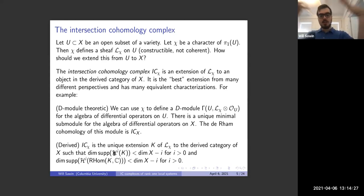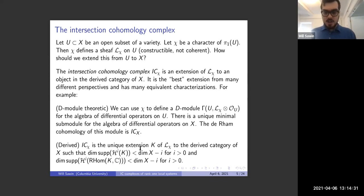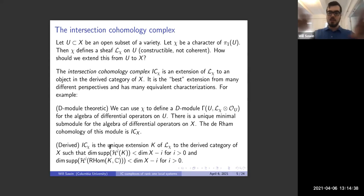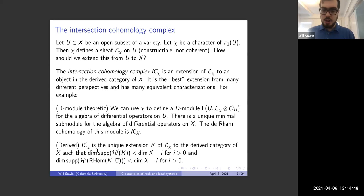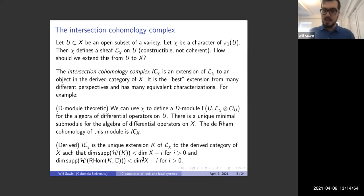The support condition is: in degree i, the support has dimension less than dim X minus i for all positive i. Each degree we have a sheaf and the support is shrinking. If we take the dual — Hom from our complex to the constant sheaf — and look at the support of that, it satisfies the same exact support condition: less than dim X minus i for all positive i.